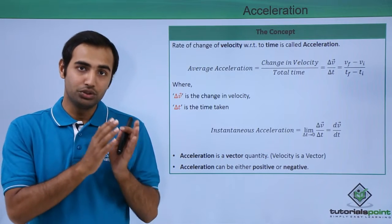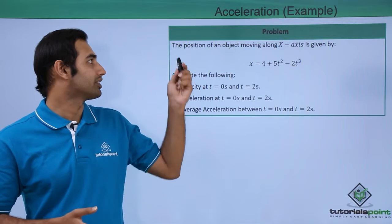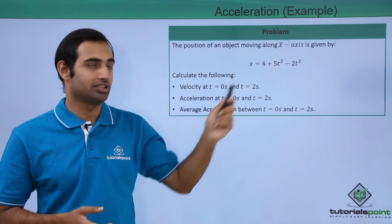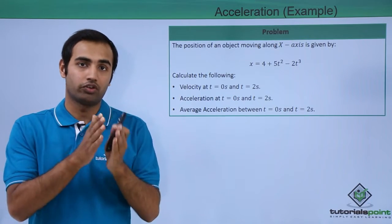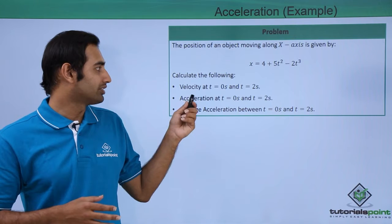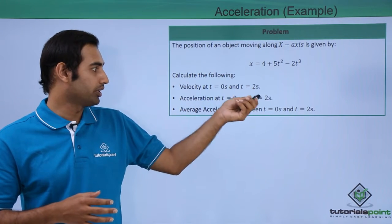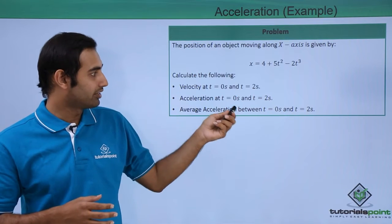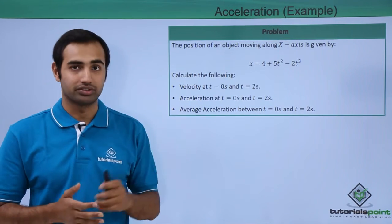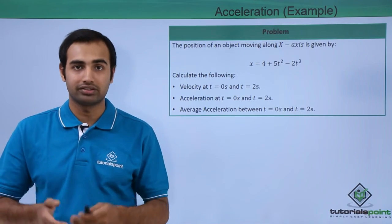Now let's use these concepts and try to solve a problem. We have a question that says the position of an object moving along the x-axis is given by this equation — this is the position of an object with respect to time. Calculate the following: velocity at t equal to 0 and t equal to 2, acceleration at t equal to 0 and t equal to 2, and average acceleration between t equal to 0 and t equal to 2. So we have been given position and we have to calculate velocity and acceleration, both instantaneous and average.